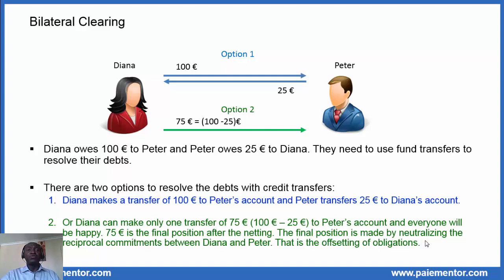There are two options to resolve the debt with credit transfers. In the first option, depicted in blue, both Diana and Peter make fund transfers — Diana makes a transfer of 25 euro and Peter makes one transfer of 75 euro to Peter's account, so two transfers are made in total. In the second option, depicted in green, Diana makes only one transfer of 75 euro to Peter's account and everyone is happy. 75 euro is the final position after the netting.